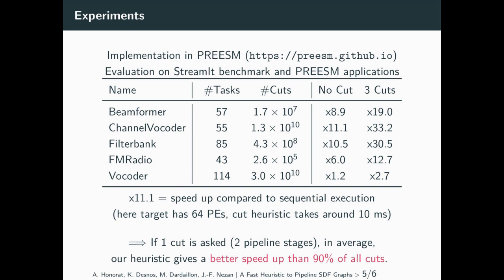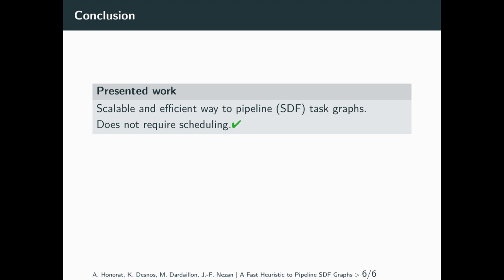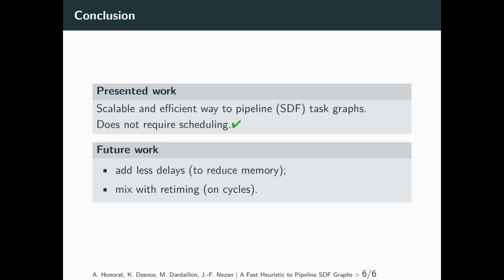Finally, we have provided a scalable and efficient heuristic to pipeline SDF graphs as well as regular task graphs. Our heuristic is a standalone optimization and does not involve any scheduling process. However, some experiments have shown that the amount of memory required to execute the application may dramatically increase due to the delays. Thus, future work is to reduce the amount of added delays by breaking data dependencies of only a subset of the multiple task executions. Also, it would be good to mix our heuristic with retiming algorithms, especially to benefit from delays located on cycles.